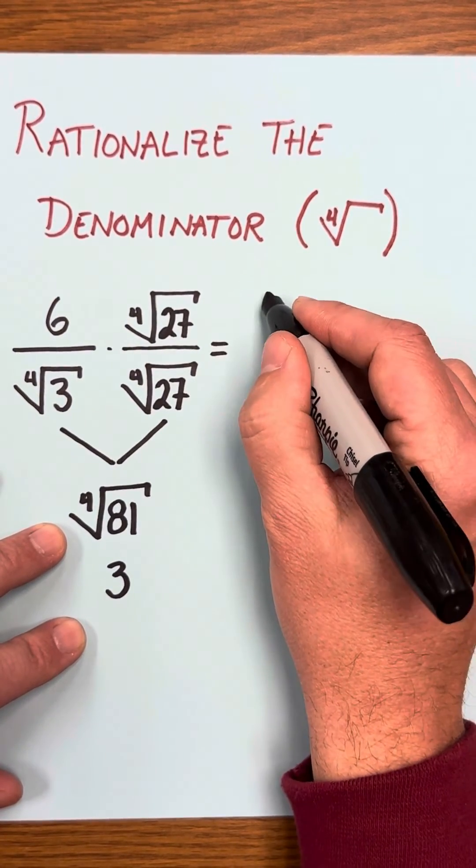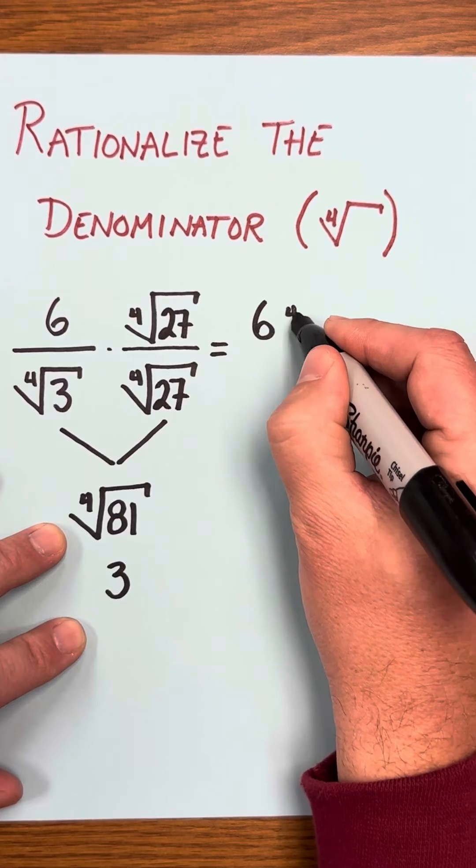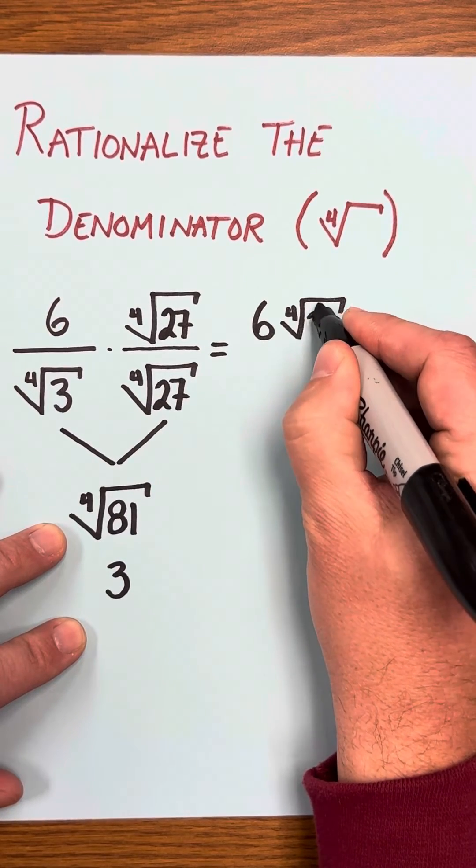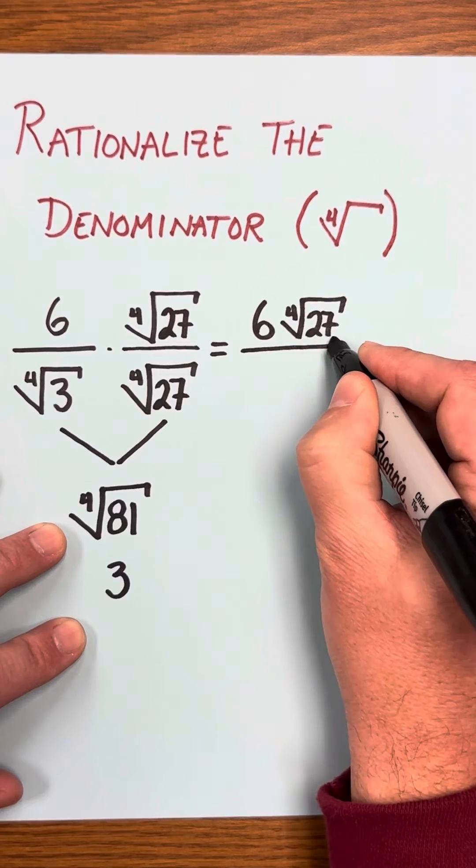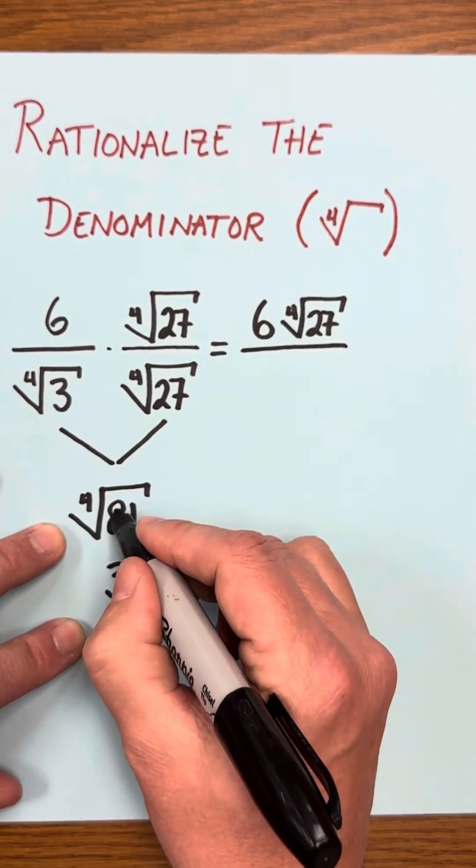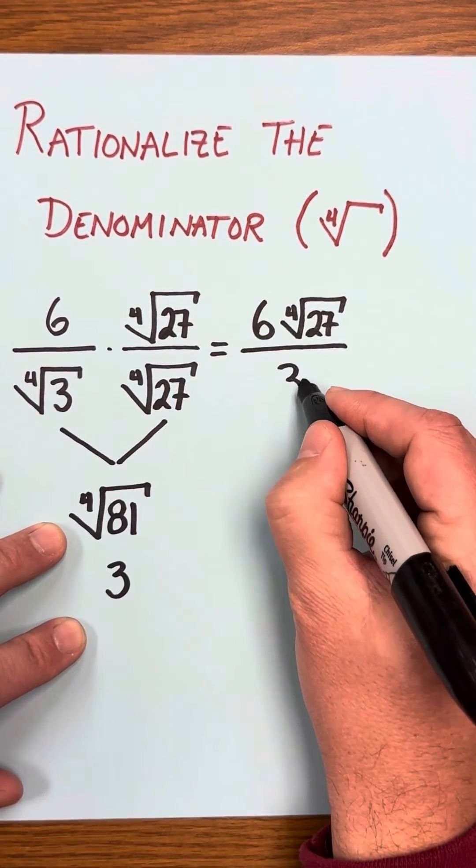So that's going to give us 6 fourth root 27 divided by this fourth root of 81, which just becomes 3.